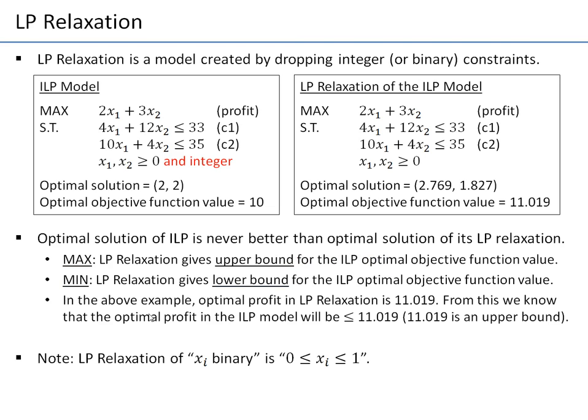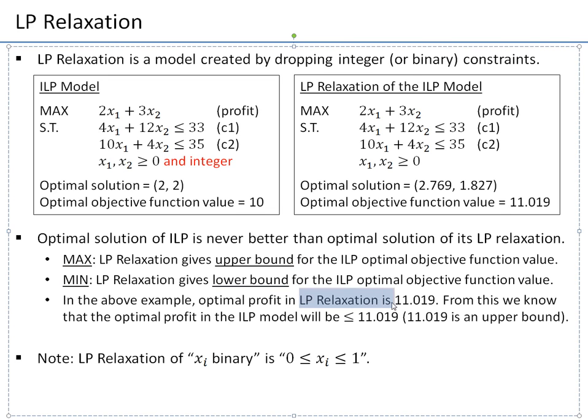Now, in this example, because we have maximization, LP relaxation gave us this value, 11.019. From this we know if we solve integer linear programming model, which we already did, but if we did this before solving it, we would know the profit will be at most 11.019, because 11.019 is an upper bound on the profit value.